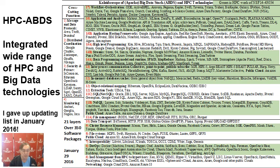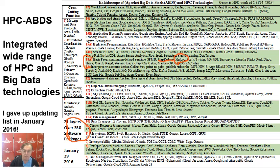This is a slide deck which summarizes 350 software systems and they are arranged in 21 layers. Each of those layers corresponds to a particular functionality important in big data systems. Hadoop fits into the very important category 14A, which is basic programming model and runtime. It categorizes MapReduce up here, with Hadoop as the first entry and Spark as the second entry.